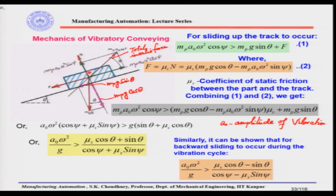Along the normal direction N, that is the normal force acting on the part, this will be MP·A0·omega²·sin(ψ). Similarly, we have the mass of the part acting as MP·g, where g is gravity. This MP·g will be resolved into two components: along N the component is MP·g·cos(θ), and along the track direction F it is MP·g·sin(θ). For sliding up the track, MP·A0·omega²·cos(ψ) must be greater than the forces acting on the other side, which are F and MP·g·sin(θ).